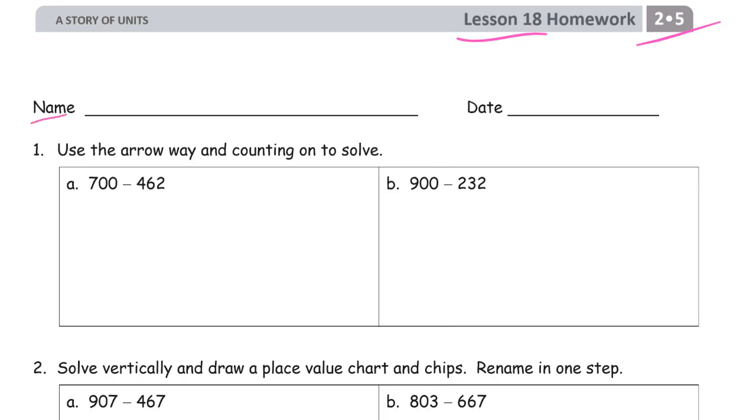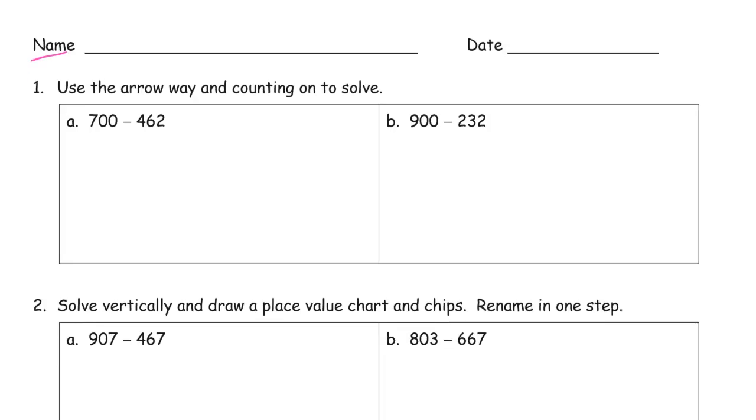We're using the arrow way and counting on to solve subtraction. Using arrow way and counting on means I'm going to start with the 462 and add my way up to the 700 and then just see what it was that I had to add.